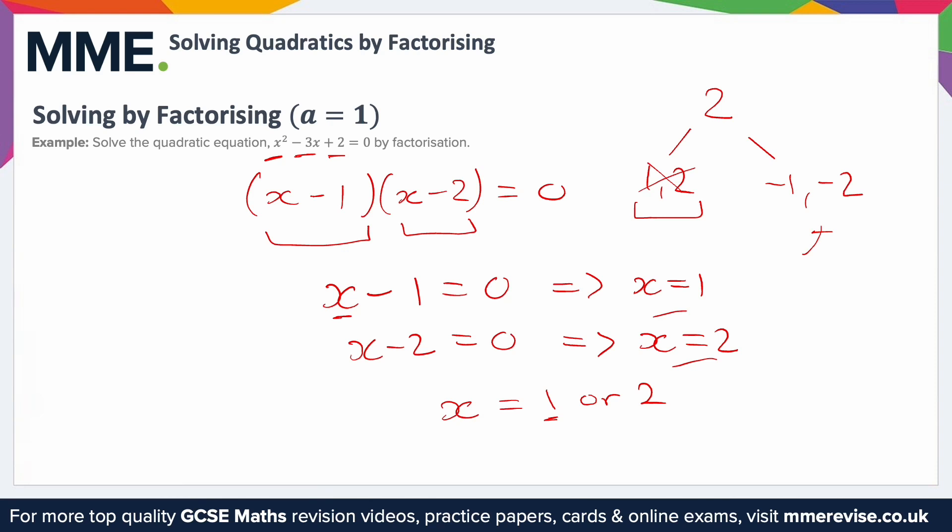And if you want to double check this after you've got your answer, you could just sub this in to here. So for example, you could do 1 squared take away 3 lots of 1 plus 2, and then work this out. Well, 1 squared is 1, take away 3 lots of 1 which is just 3, plus 2. Then 1 take away 3 is minus 2, plus 2 gives you 0, which is exactly what we wanted. So we know that solution is correct. You could of course do the same for the other one as well.